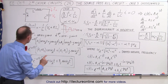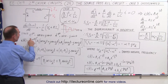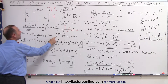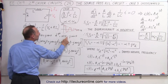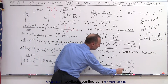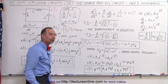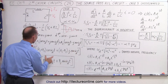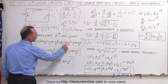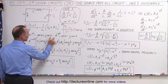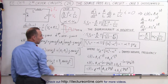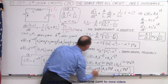We remember that e to the j·θ can be written as cosine θ plus j·sine θ, and e to the minus j·θ can be written as cosine θ minus j·sine θ. Here we have the positive j·ωd·t and there the minus j·ωd·t. So we expand those as the cosine plus j times the sine, and the cosine minus j times the sine, replacing each complex exponential accordingly.